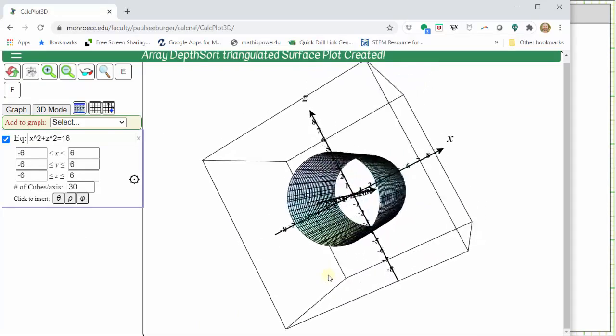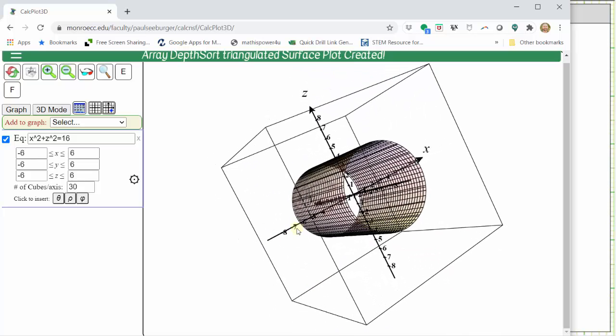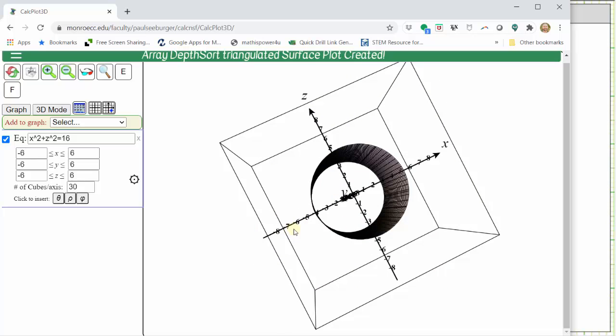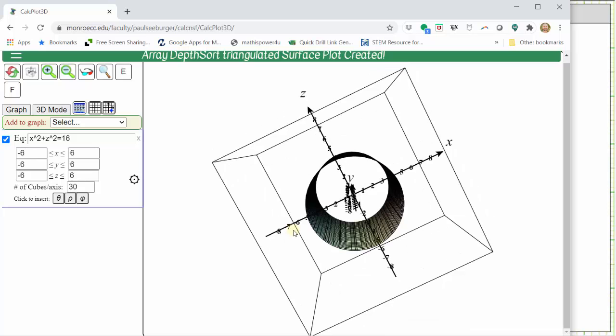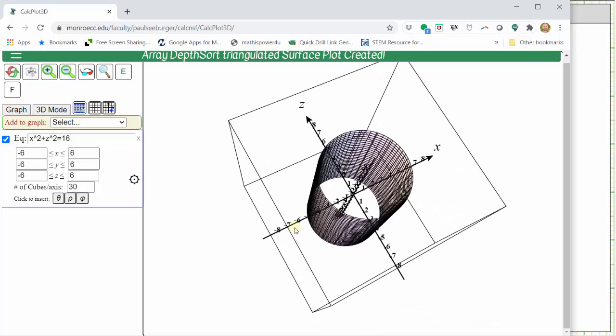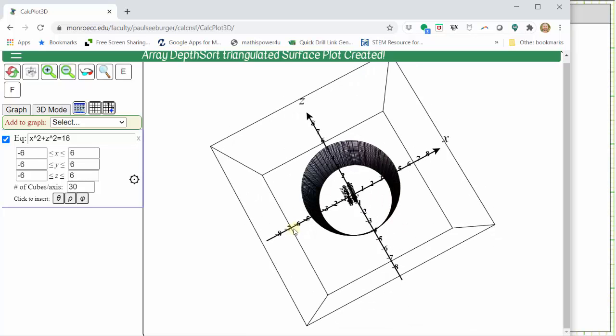And now let's see if we can determine which trace would be a circle. We'll notice here if we look down on the xz trace, we see we have a circle with a radius of four. This is the key to determining the equation of the cylinder.